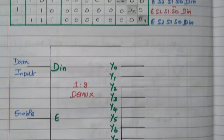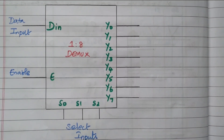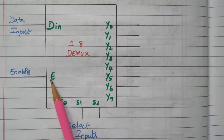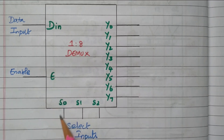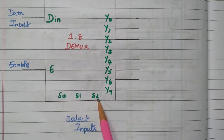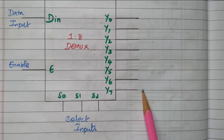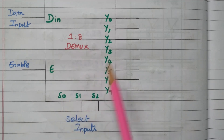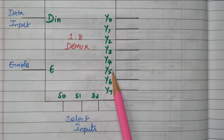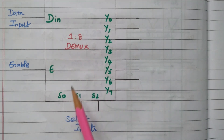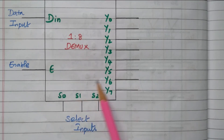We will now see the block diagram of the 1-to-8 demultiplexer. There is one data input D_in, one enable input — if enable is 1 the circuit is activated, otherwise 0 — and three selection inputs S0, S1, S2. For 0,0,0 the first combination, Y0 is available at the output with remainings 0. For 0,0,1 that is combination 2, Y1 is available. There are 8 combinations giving 8 outputs; out of 8 outputs, any one will be available depending on the selection lines.